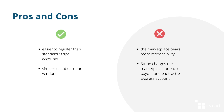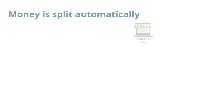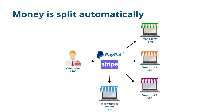However, there is a reason why the decision whether or not to use Express accounts is left up to the marketplace. Firstly, the marketplace bears more responsibility. Secondly, Stripe charges the marketplace for each payout and each active Express account. In this video, we discussed two payment systems using which you can split money automatically between your vendors. If you want to know more about other models of money flow in marketplaces, go check out the videos on our YouTube channel.